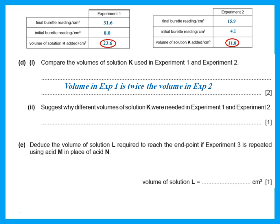If twice the volume of K was needed in experiment one, that means the acid in experiment one is more concentrated. Solution M needed 23.6 cm³ and solution N needed 11.8 cm³. The one that needed more volume is the more concentrated, so solution M is twice as concentrated as solution N.